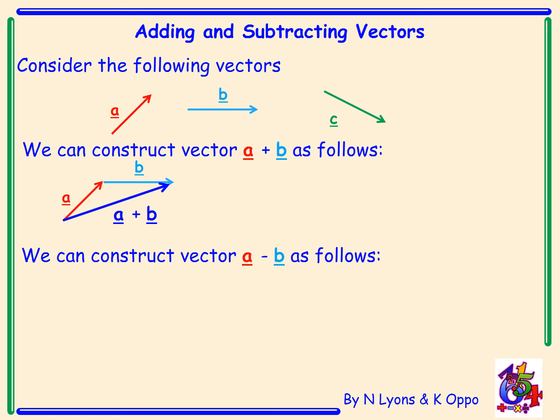We can also construct vector a minus b. Please note this is the same as drawing a add negative b, which means we will change the direction of vector b. Vector a, negative b, the resultant vector is a minus b.